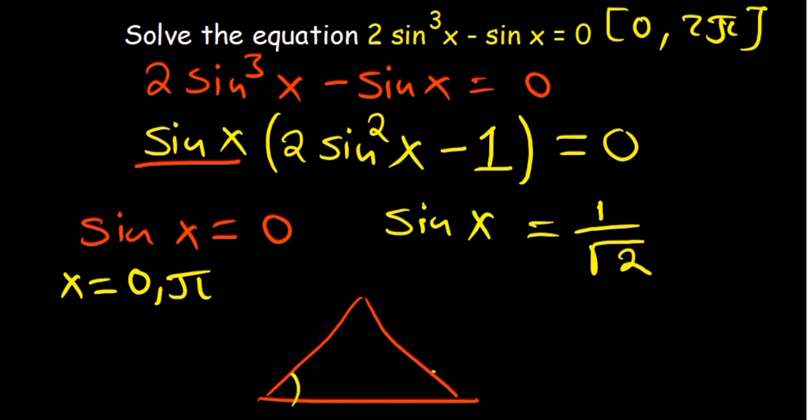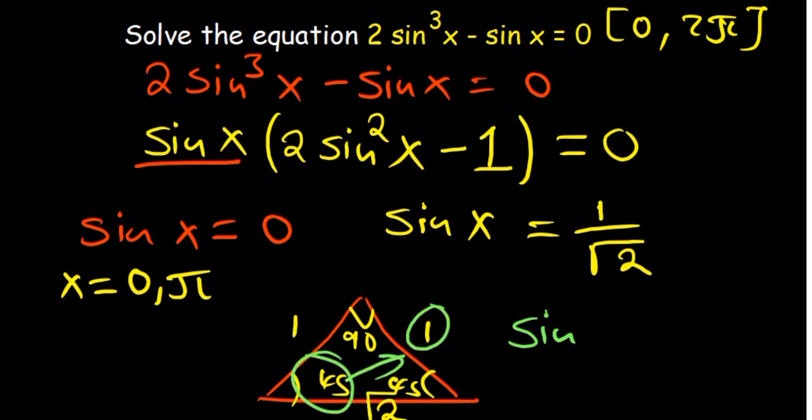So in this case I already know that this is coming from a 45-45-90 triangle. So there is a 1, that's a 1, and then this is like root of 2. Sin theta is equal to the opposite over the hypotenuse. So what angle can give me the opposite of 1 and the hypotenuse of root of 2? So obviously it's 45, because if I use this angle the opposite is 1, the hypotenuse is root of 2.